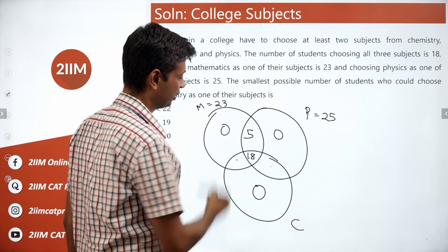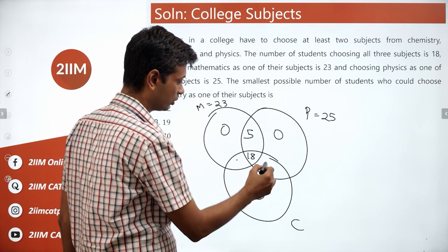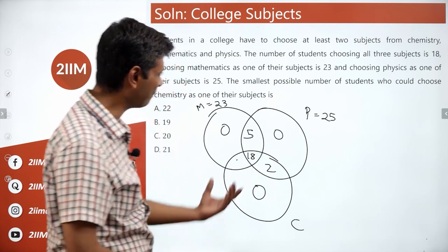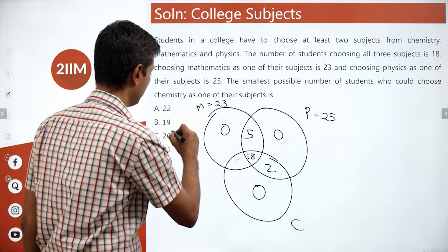So as high as possible, 18 goes here. We could put 5 here. 18 plus 5 adds up to 23. 18 plus 5 is 23 out of the 25, so we could put 2 here. This is the best possible scenario to have chemistry as low as possible, and that number will be 20.